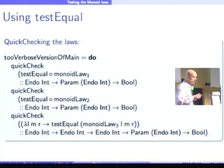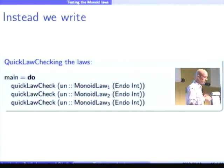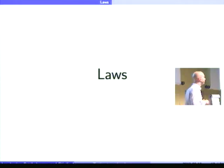So, instead, what I want to write is the following. So, I want to write a QuickLawCheck to find values of my three laws applied to Endo int. So, this is my goal, and this is what our framework is giving. And in the rest of the talk, I will show what kind of representations you need to be able to write this.